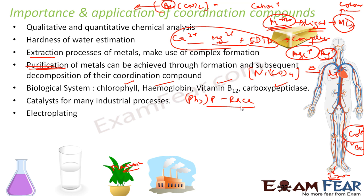Coordination compounds are used in electroplating. While you can do electroplating with crude metal using electrical methods, for smoother electroplating we use complexes. For example, for silver we use [Ag(CN)₂]⁻, and for gold we use [Au(CN)₂]⁻. This gives smoother, better quality electroplating.